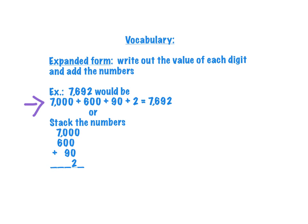If we were going to write out the value of each of those digits, the 7 is worth 7,000, the 6 is worth 600, the 9 is worth 90, and our 2, of course, is worth 2. So basically we just set that up as an addition problem, and we add those numbers together, and then we get our number that we began with, which is 7,692.